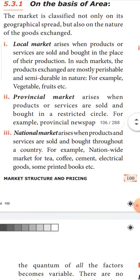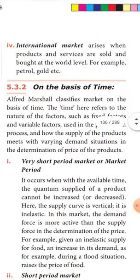Next is national market. National market arises when products and services are bought and sold throughout the country. For example, rice, coffee, tea, cement, and printed books all enjoy national market — rice produced in Thanjavur and South India is utilized in North India, wheat grown in North India is utilized here, and tea grown in Assam is bought and sold here. Such commodities are marketed through national markets.